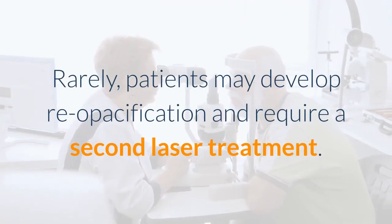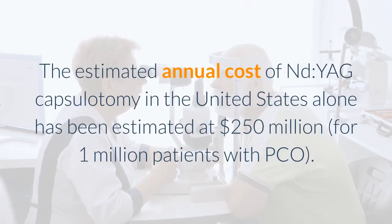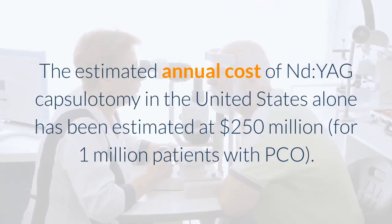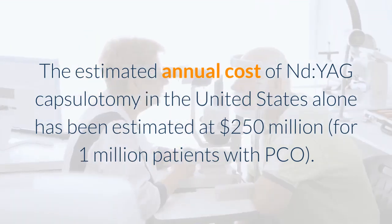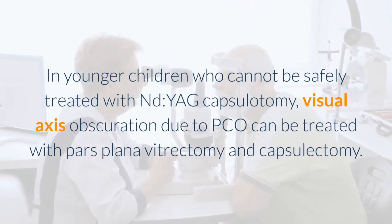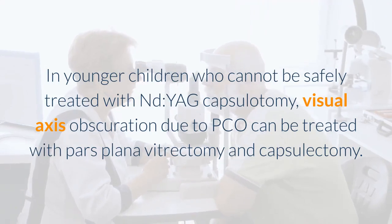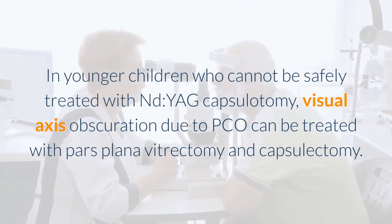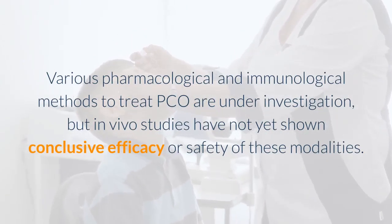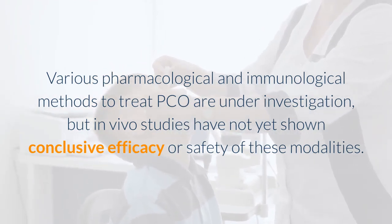Rarely, patients may develop re-opacification and require a second laser treatment. The estimated annual cost of ND:YAG capsulotomy in the United States alone has been estimated at $250 million for 1 million patients with PCO. In younger children who cannot be safely treated with ND:YAG capsulotomy, visual axis obscuration due to PCO can be treated with pars plana vitrectomy and capsulectomy. Various pharmacological and immunological methods to treat PCO are under investigation, but in vivo studies have not yet shown conclusive efficacy or safety of these modalities.